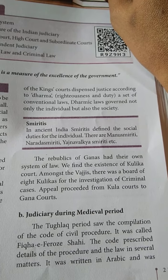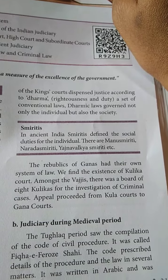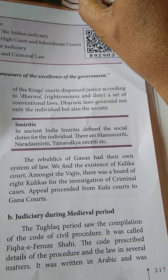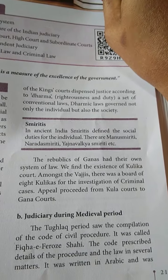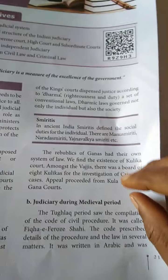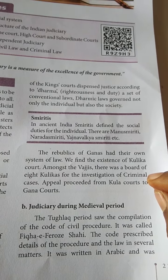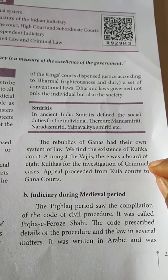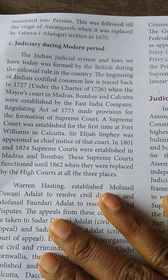Cases included criminal cases and civil cases. During the medieval period, a compilation of the code of civil procedure was made. It was called Fatawa-e-Feruz Shahi. The court prescribed details of procedure in several matters. It was written in Arabic and then translated into Persian. This was followed until the reign of Aurangzeb.